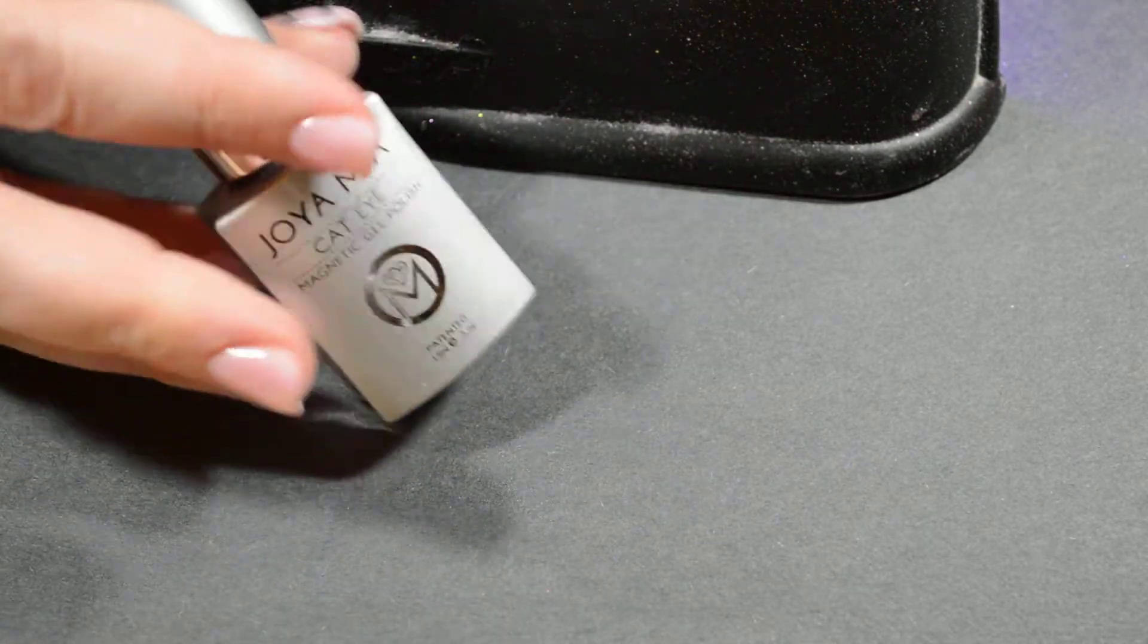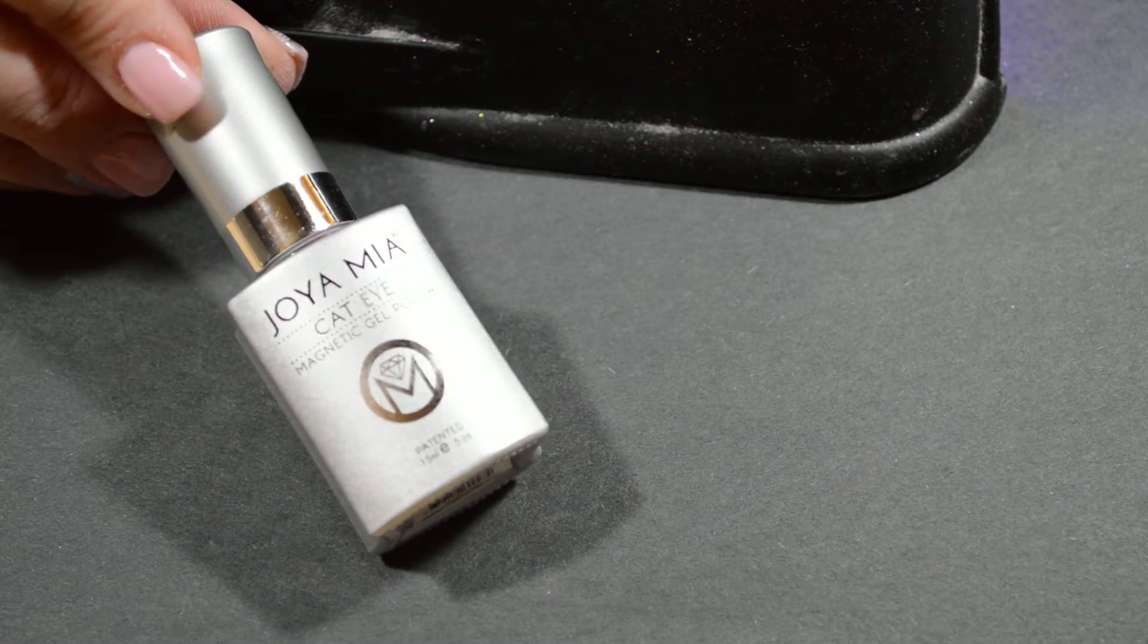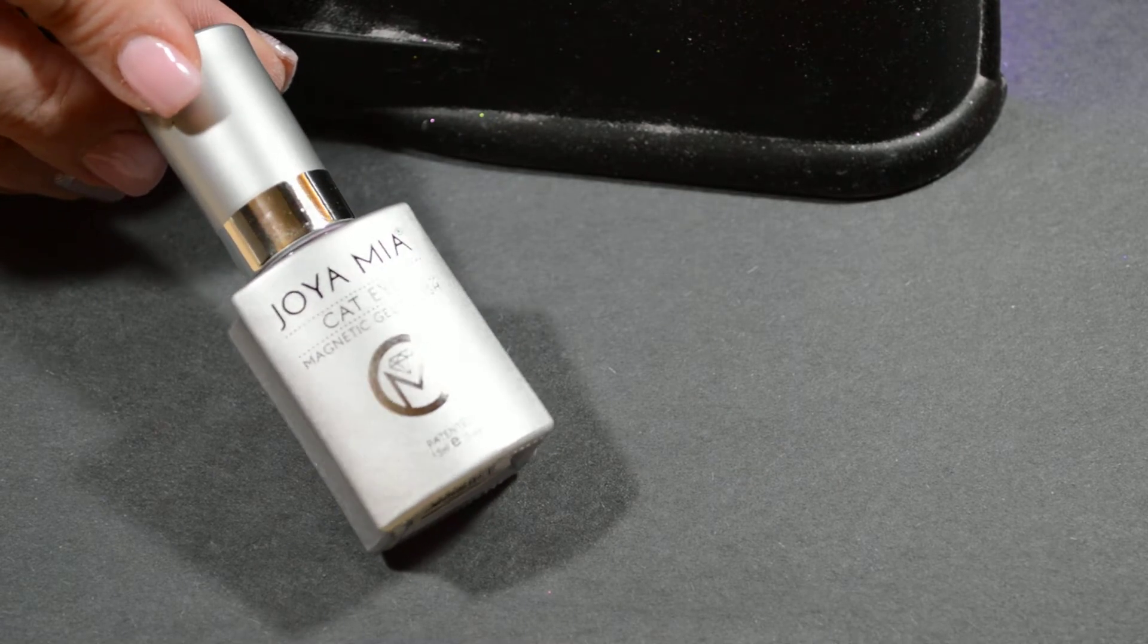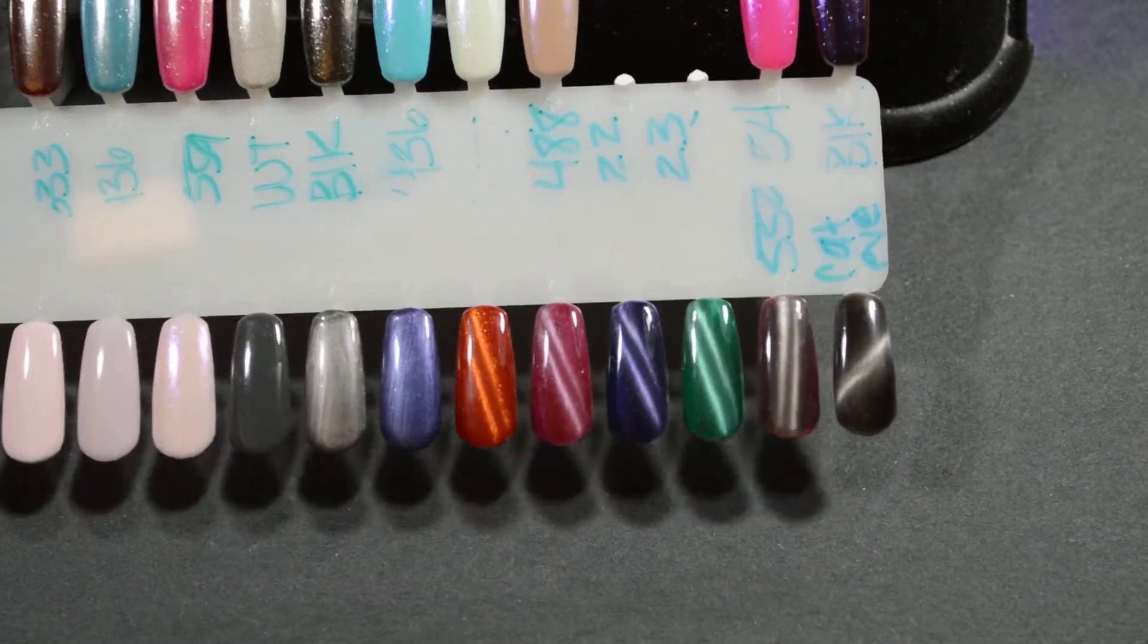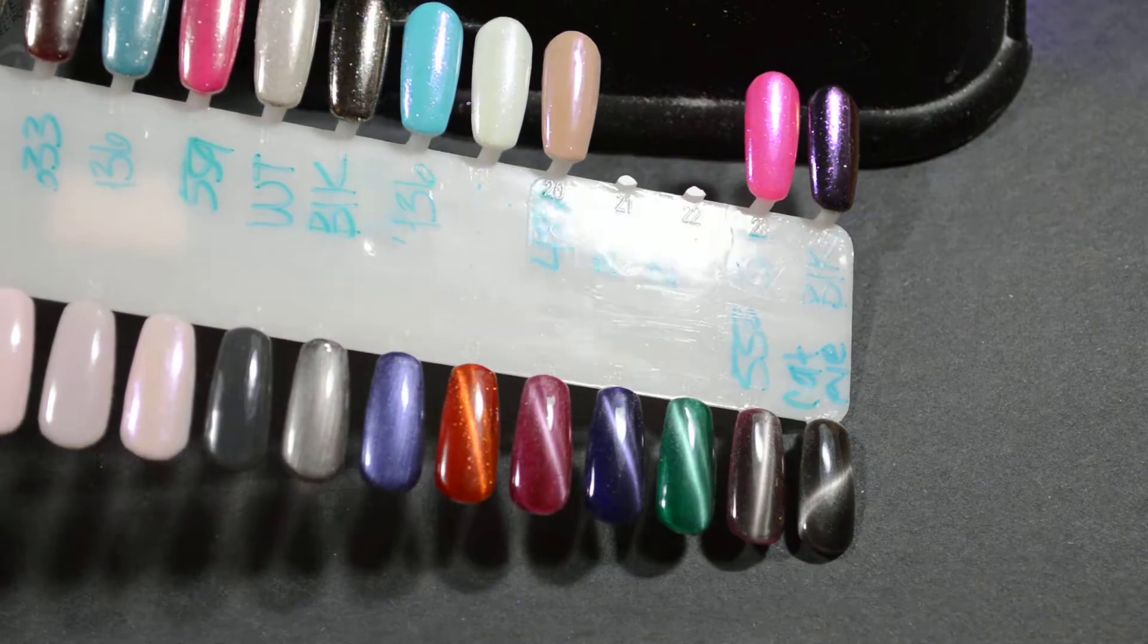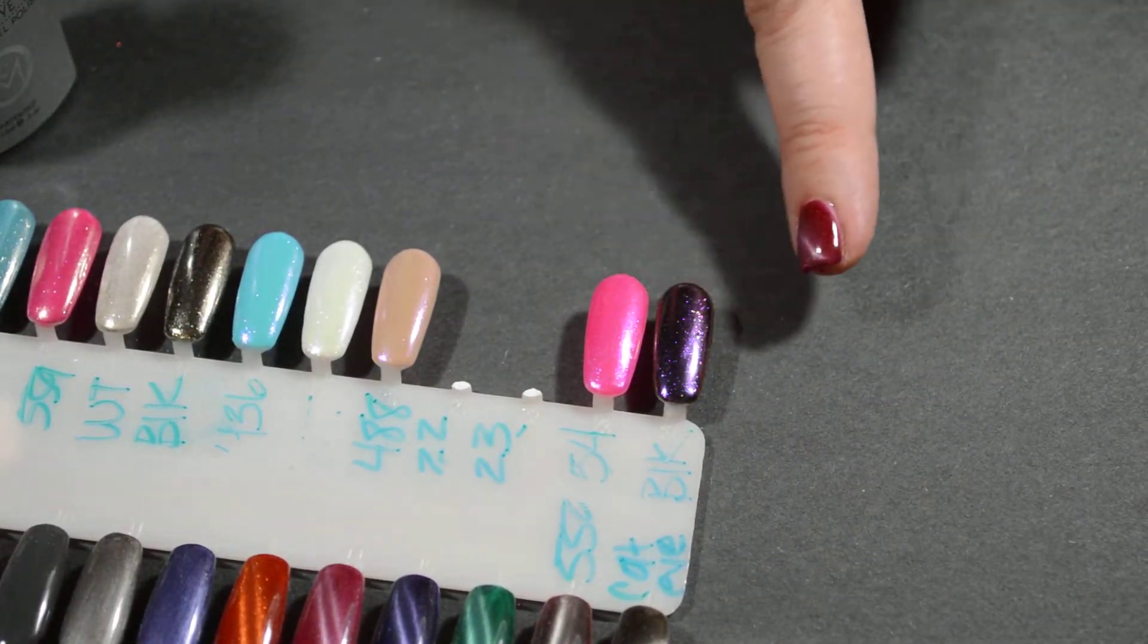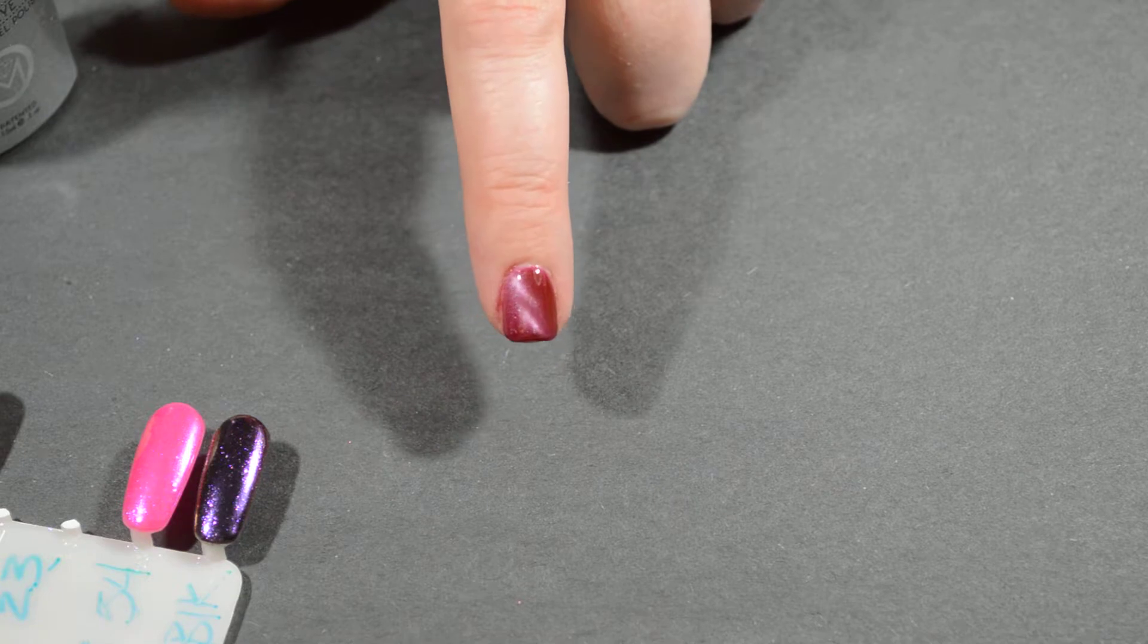Now this polish brand has a ton of colors. They have bright blues and greens and oranges, and they have the black that's kind of a gray. These are the colors I have, not too many, but I want to get more for sure. You can only tell as you're moving the nail that that line goes from a solid line to kind of a double line.